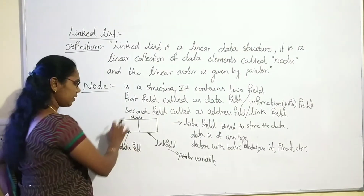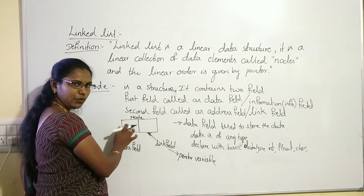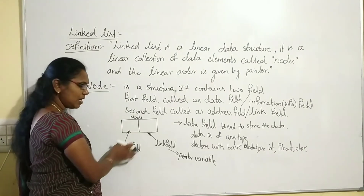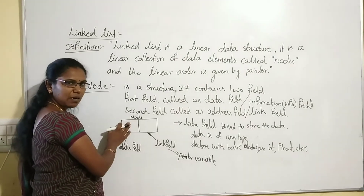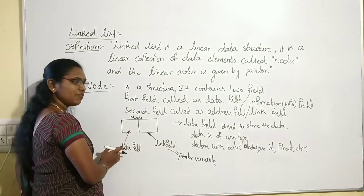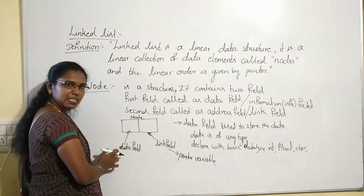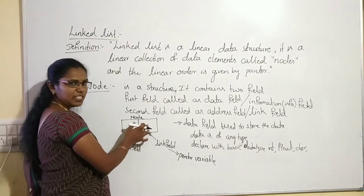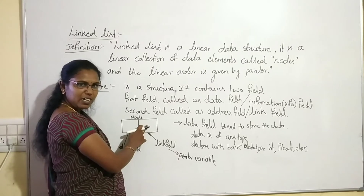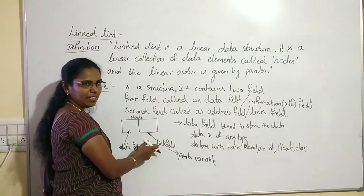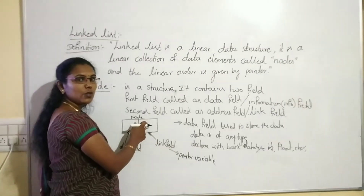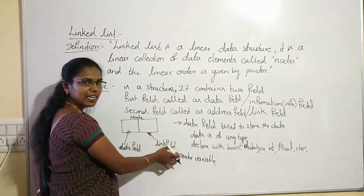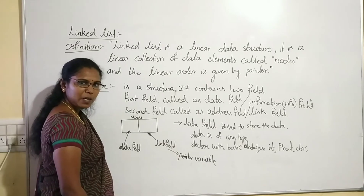To summarize: node is a structure having two fields. The first field is the information or data field, used to store data of any type, declared using basic data types. The second field is the address field, also called the link field, which holds the address of the next node. That is why it is declared as a pointer variable.